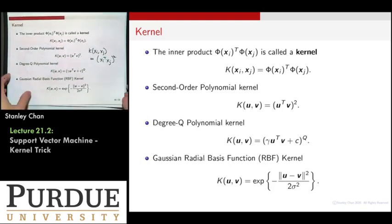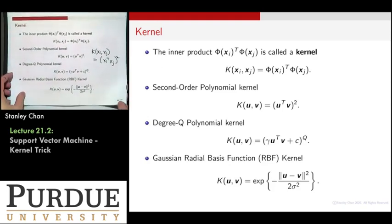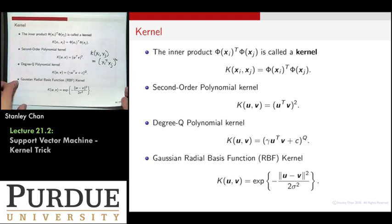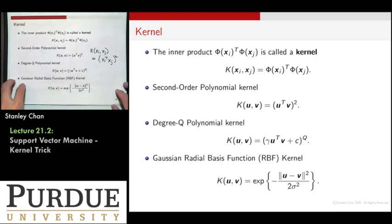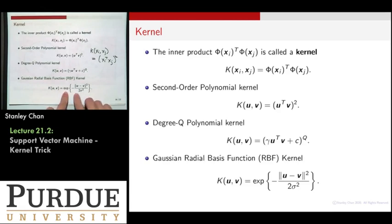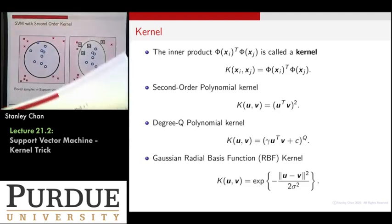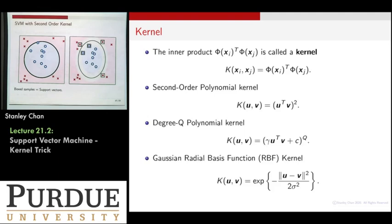The most powerful and widely used kernel for SVM today is the radial basis function, defined as a Gaussian kernel. We have seen its usage at the very beginning of our course, and this is another time we are using the idea.